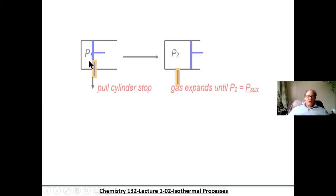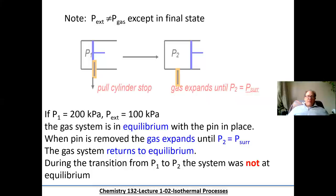We have a pressure higher than external pressure with a pin confining it. We pull the pin out and allow the gas to expand until the surroundings pressure and the internal pressure of our system are equal. If I had an internal pressure of 200 kilopascals and an external pressure of 100 kilopascals, when I remove the pin the equilibrium is blown. The gas expands to P2 until P2 equals the pressure of the surroundings, returning to another equilibrium. During the transition from P1 to P2, the system was not at equilibrium.